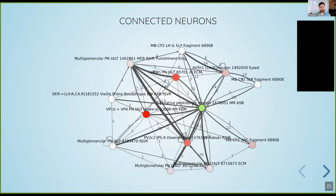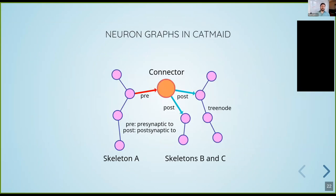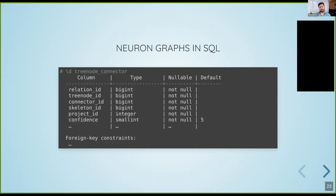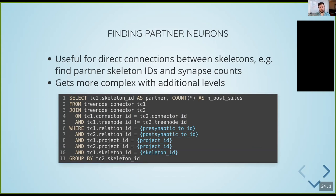Ultimately we are interested in graphs between those neurons, and they can get complicated quickly. We represent synapses through certain hub nodes which we call connectors. Individual nodes of these skeletons or neurons can connect to these hub nodes with a defined relation. This way we have a lot of flexibility to define different types of synapses, the most common being the chemical synapse, which has a pre-synaptic part and some post-synaptic parts. If we have this kind of graph relationship between neurons, we can do different joins to get partners and subsequently find paths and so on.